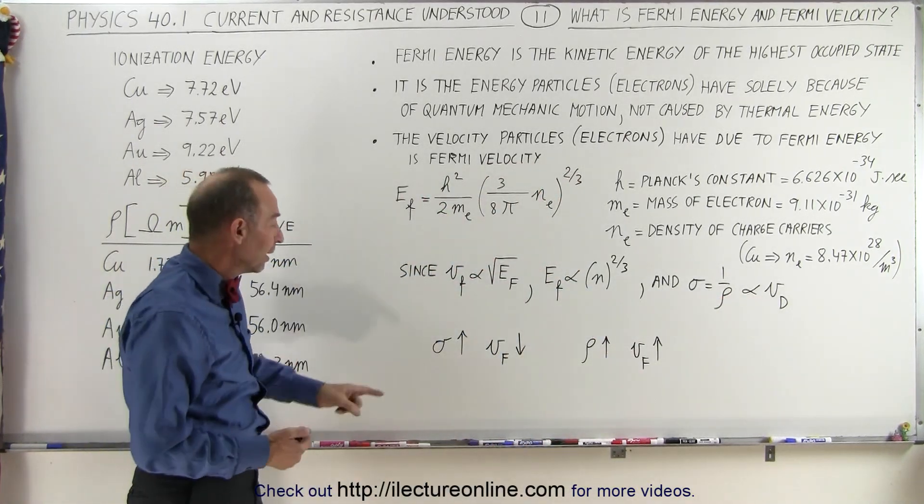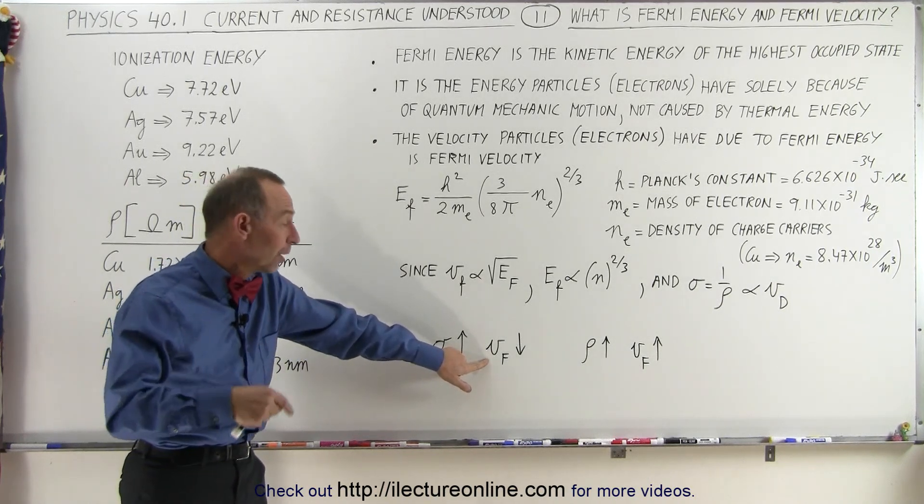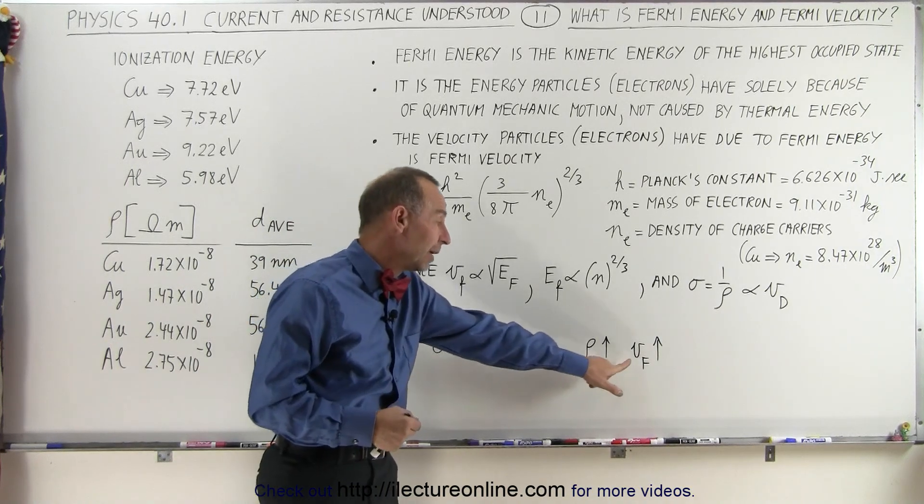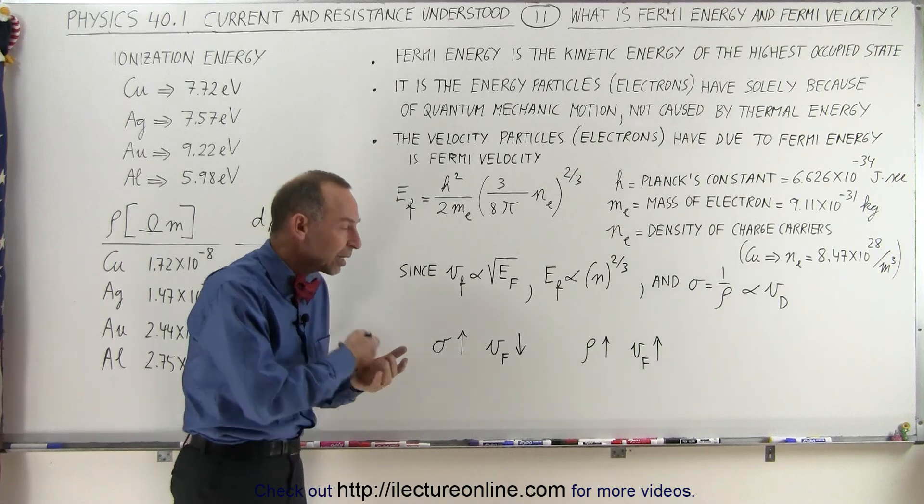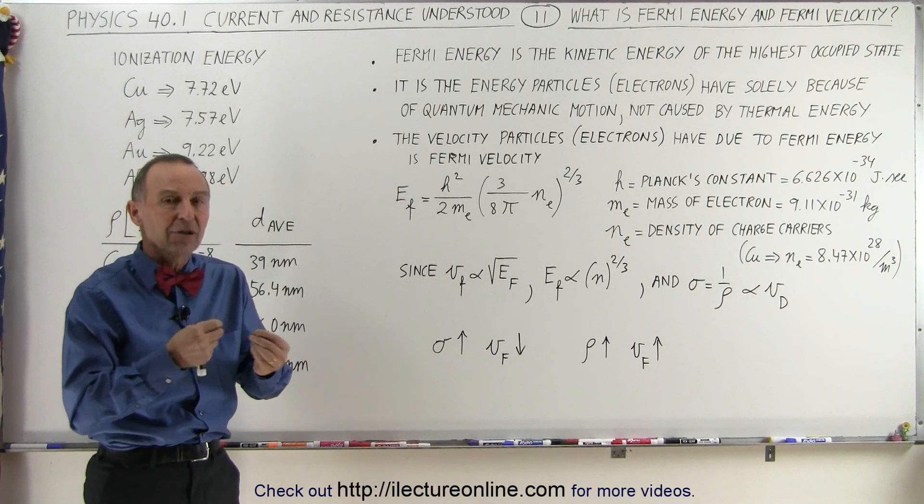And the conductivity is the inverse of the resistivity. Therefore, the conductivity is proportional to the drift velocity. Ultimately we can conclude that the conductivity goes up if the Fermi velocity goes down or the Fermi energy goes down, and the resistivity goes up if the Fermi velocity goes up. So there is a relationship between the conductivity and the resistivity and that Fermi velocity and that Fermi energy.